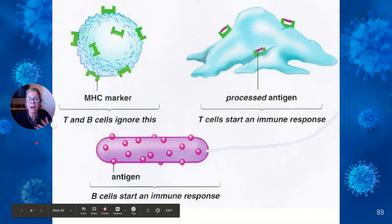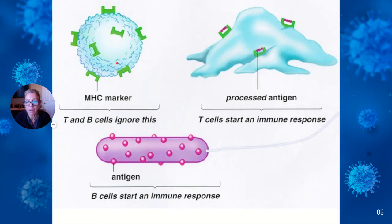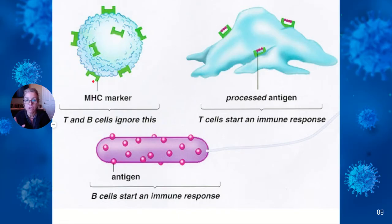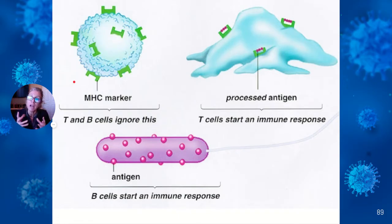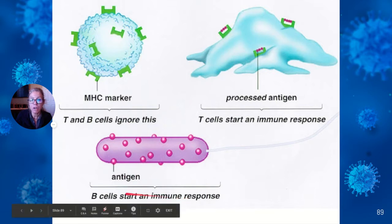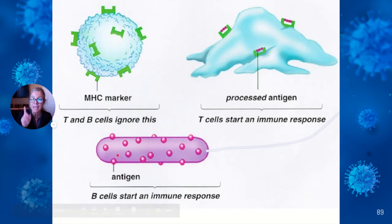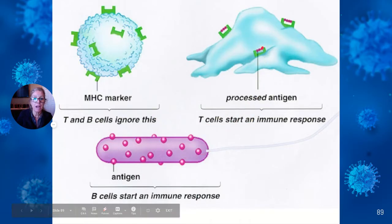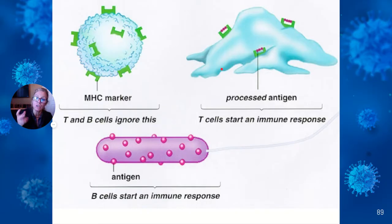This is a cell whose MHC marker is empty — both T and B cells will ignore it. T cells ignore it because there's no antigen in the MHC. B cells ignore it because B cells are not stimulated by antigen-presenting cells — they are triggered by the actual antigen on the actual pathogen itself. T cells will respond to this one because this cell has been eaten, broken up, and is now being displayed on MHC2 — this looks like a macrophage presenting it to a T cell. MHC2 means 'I will help you.'